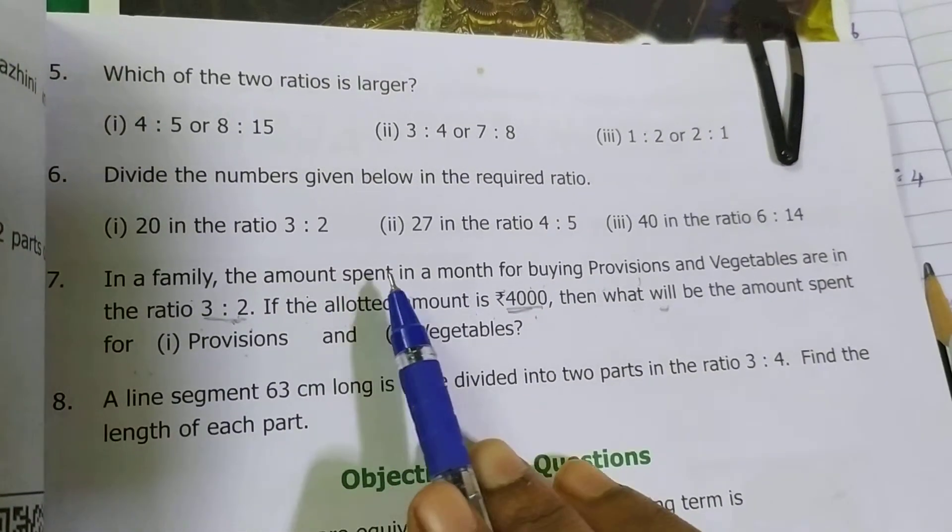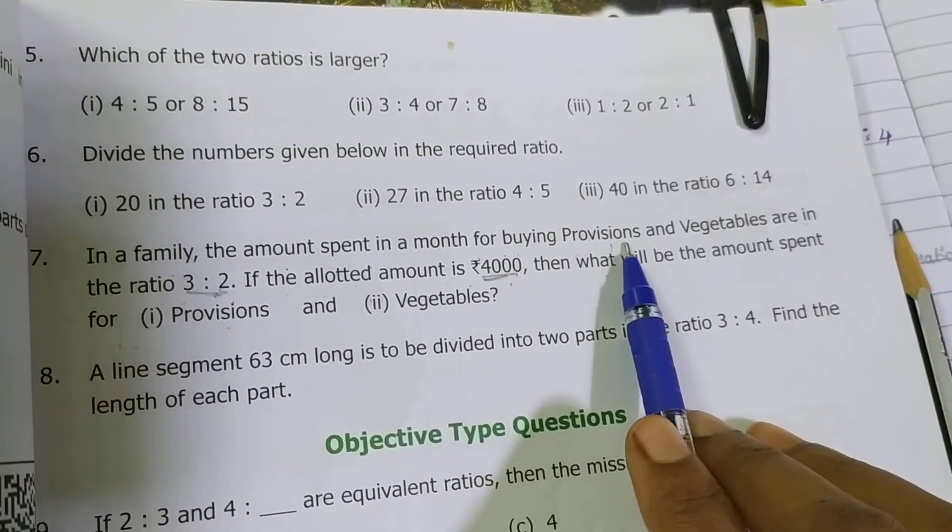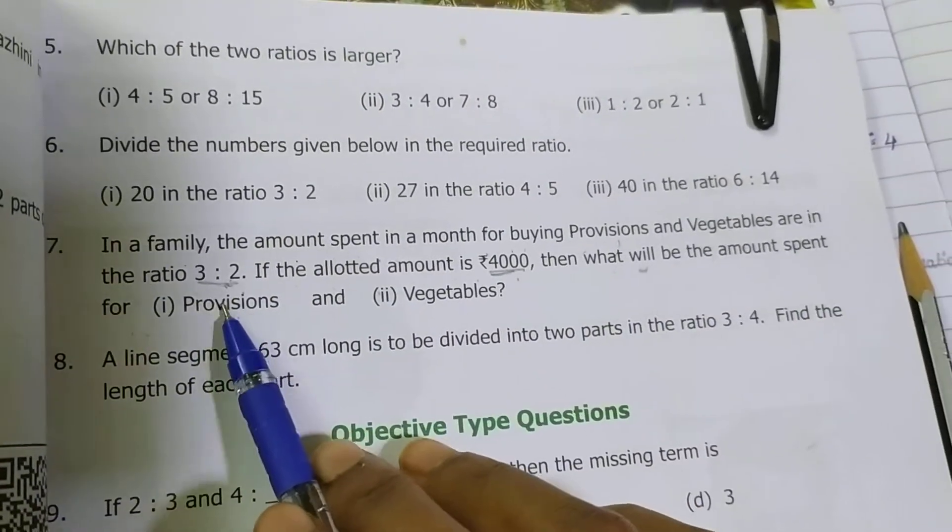In your family, the amount spent in a month for buying provisions and vegetables are in the ratio 3 is to 5.